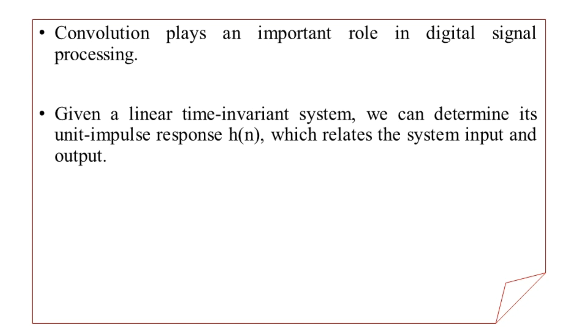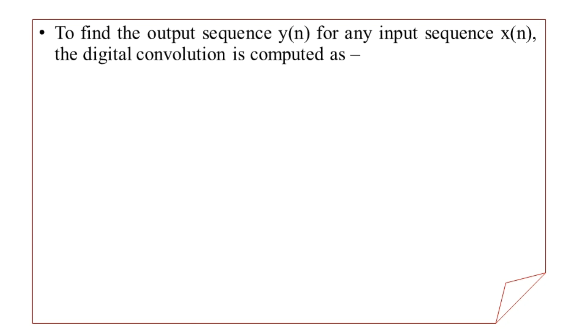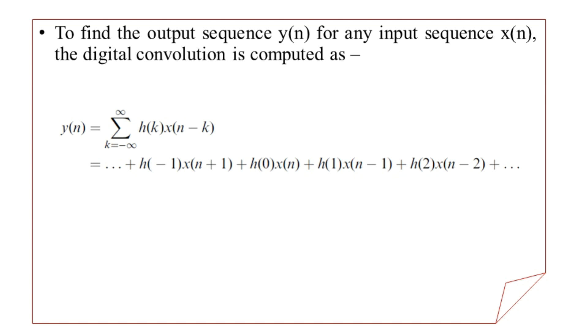Now let us see how the convolution operation is performed by taking X of N — generally the input discrete time sequence — with H of N, the specific unit type impulse response for the LTI system. For finding the output sequence, which we denote as Y of N, we are going to perform the digital convolution operation. Let us see the mathematical representation of this convolution operation.